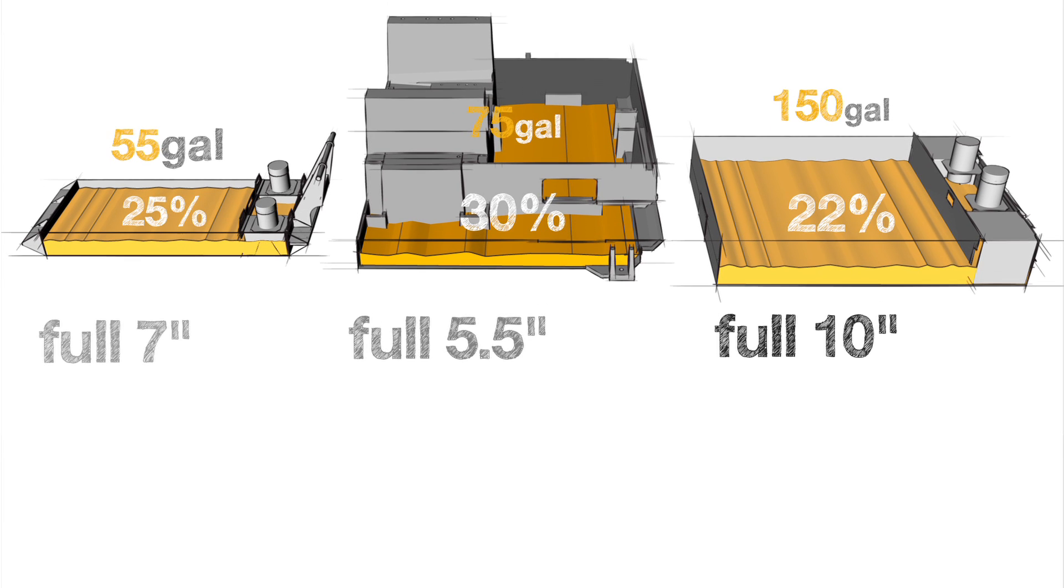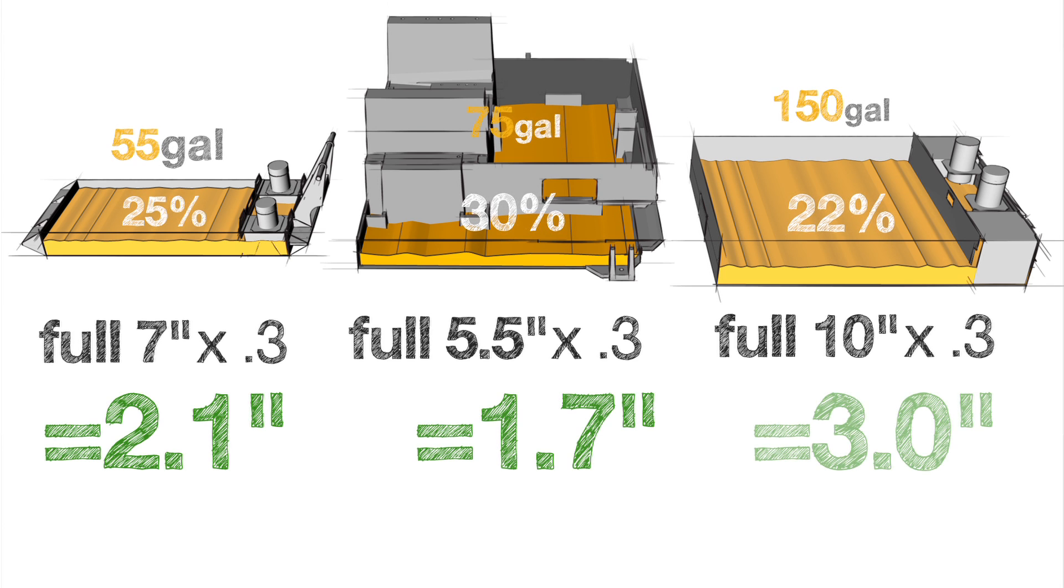For each of our tanks, we start with their respective tank full heights. Then we multiply each of these numbers by 0.3 to reduce the level of coolant down to 30%.